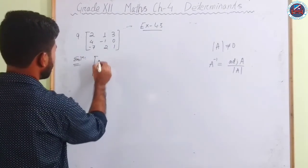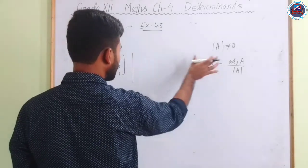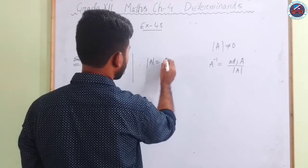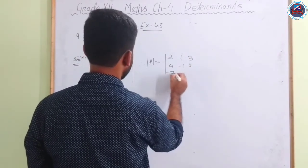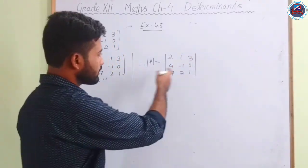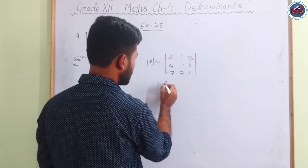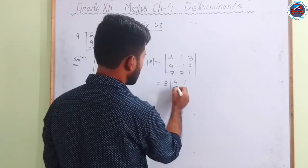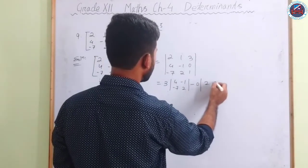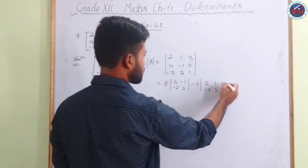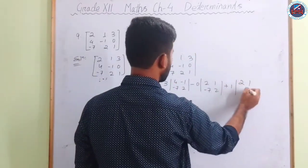The matrix is A = [[2,1,3],[4,−1,0],[−7,2,1]]. To find det(A), we expand along the third column because it contains 0. The expansion gives: 3 × cofactor of 3 + 0 × cofactor of 0 + 1 × cofactor of 1. The minor for element 3 is [[4,−1],[−7,2]] and the minor for element 1 is [[2,1],[4,−1]].